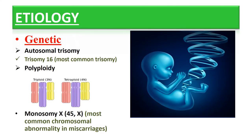Regarding etiology, the etiology of miscarriage is often complex and obscure. The first factor is genetic. The majority of early miscarriages are due to chromosomal abnormality in the conceptus. Autosomal trisomy is a common one, and the most common trisomy leading to miscarriage is trisomy 16.